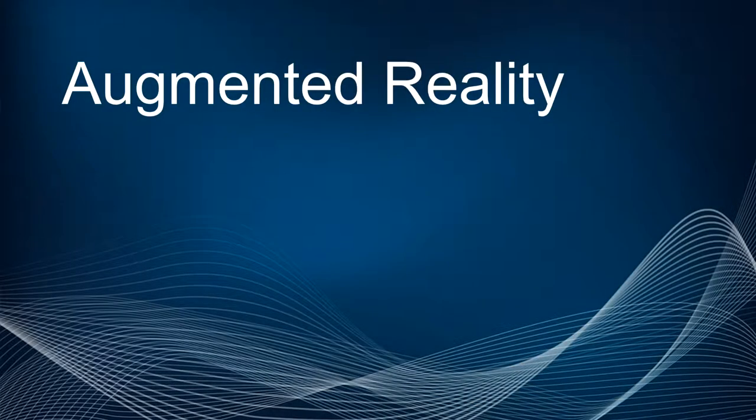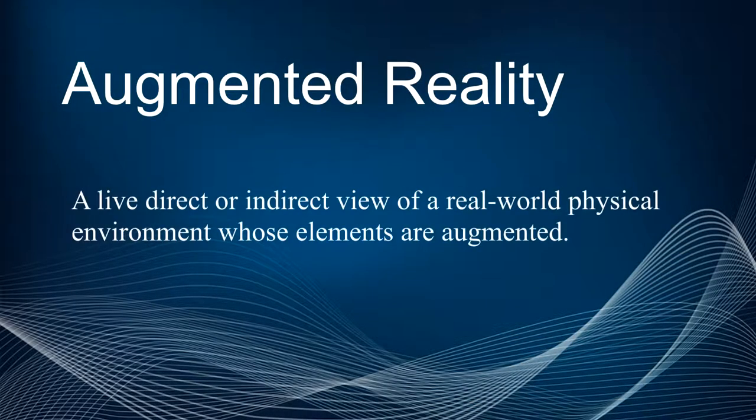Augmented reality is a live, direct, or indirect view of a real-world physical environment whose elements are augmented. Using components like computer generated sensory input, video graphics, and GPS data, things that are not normally there in reality appear visually when you are using an augmented reality simulation.